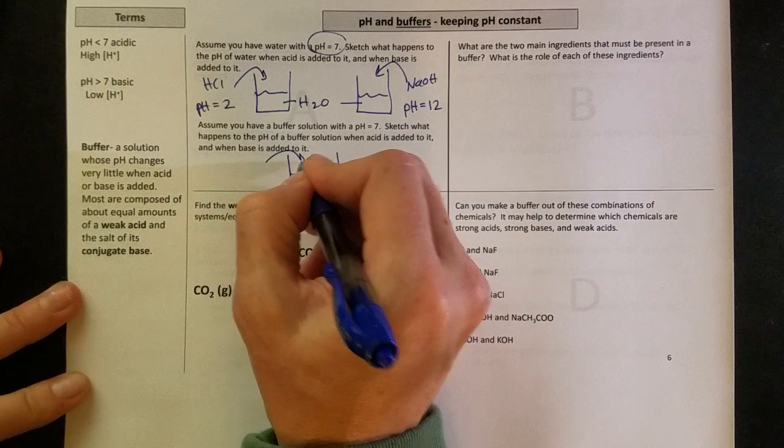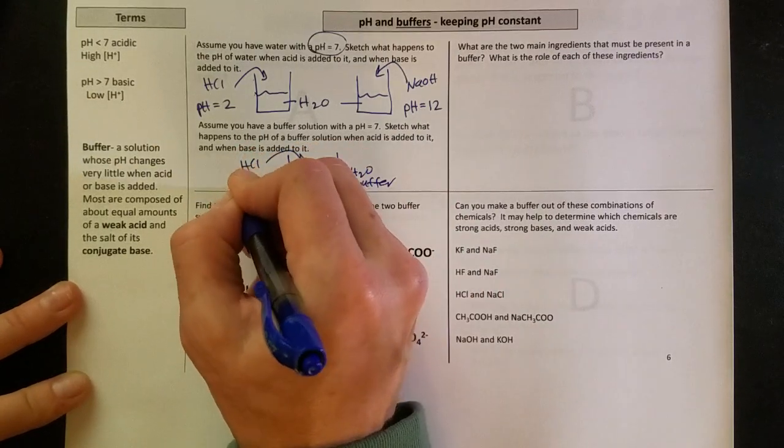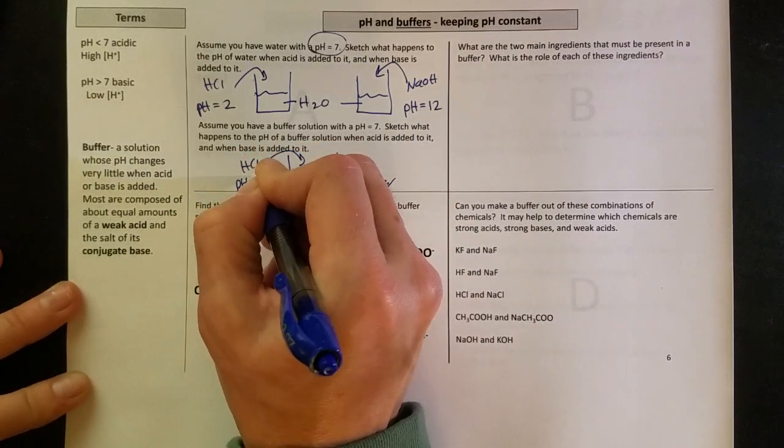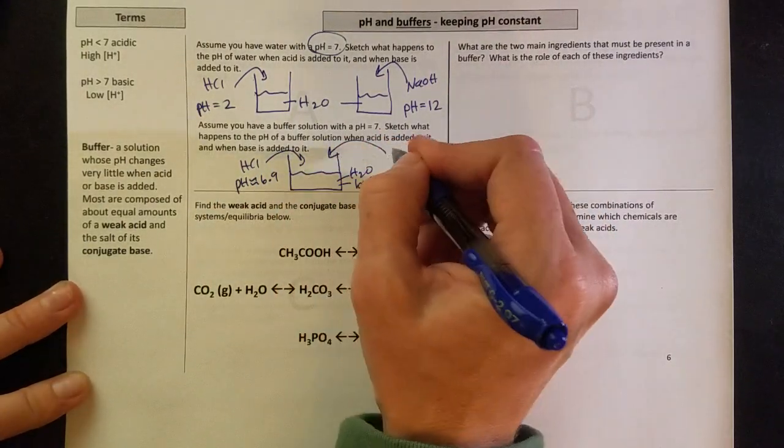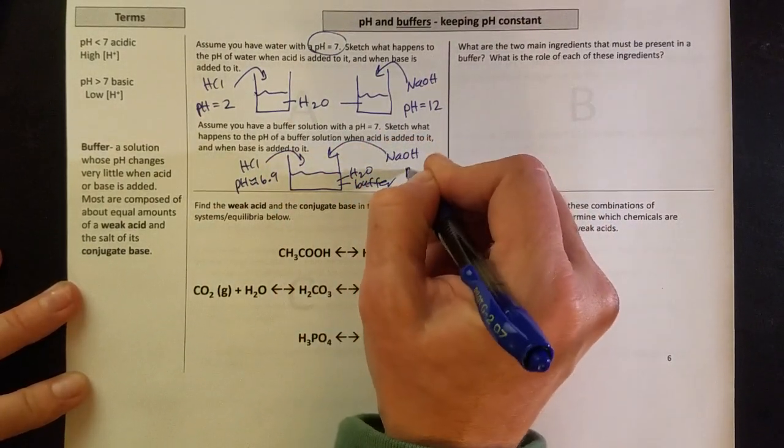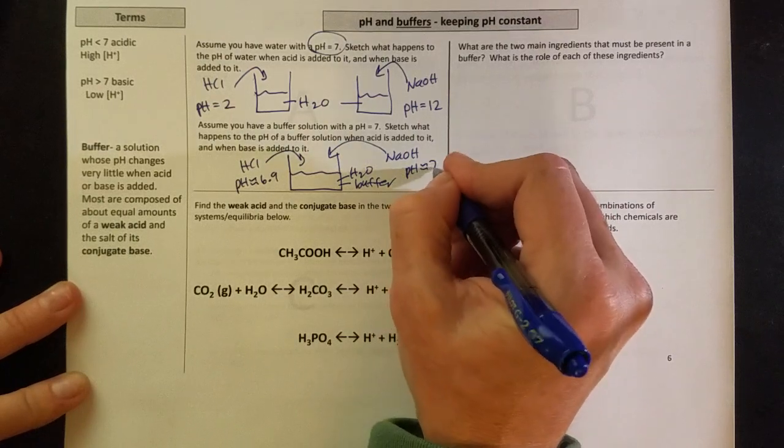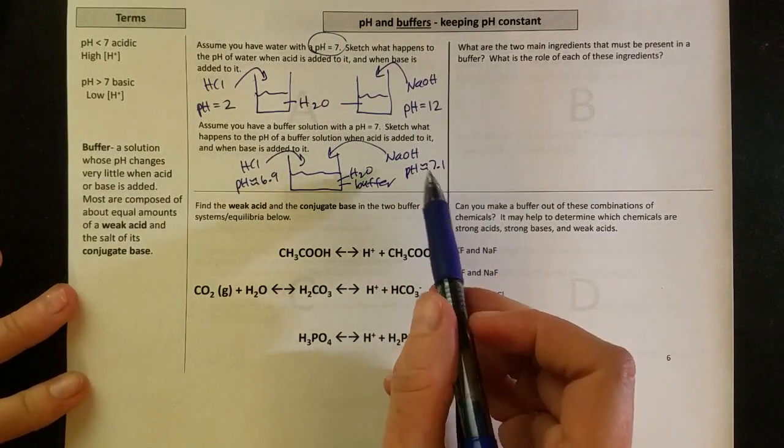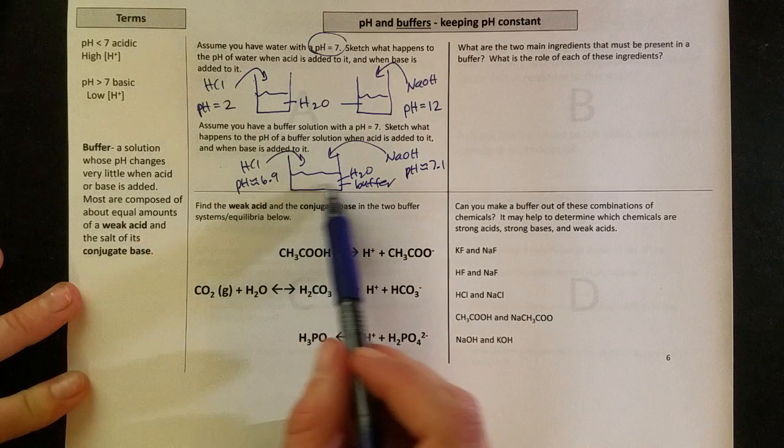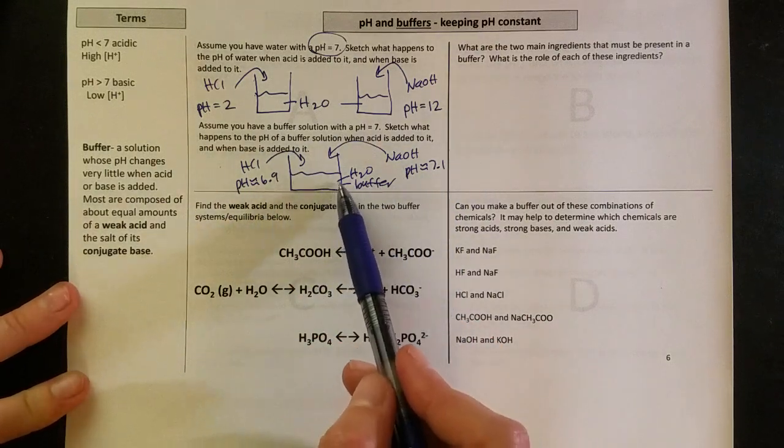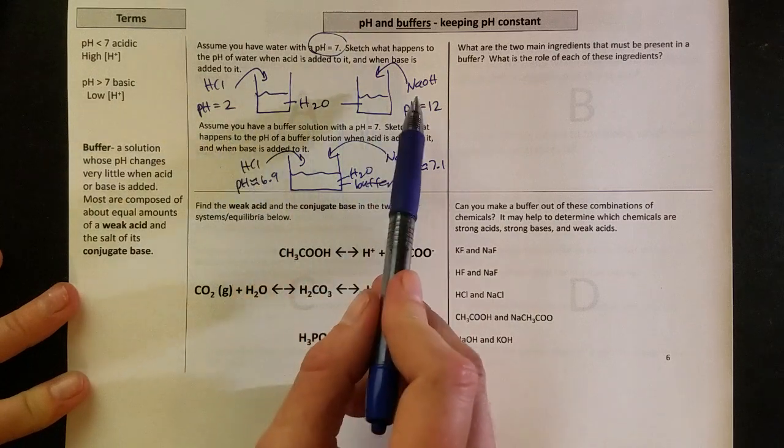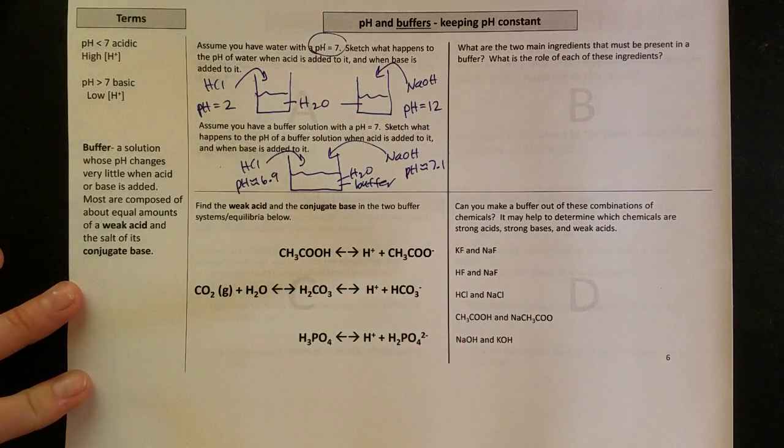If I add acid, that pH will stay right around 7, maybe 6.9. Or if I add base to it, that pH is going to go up, but just a tiny bit, maybe 7.1. And so this is much more desirable. To have boring pH changes is good for our blood. We don't want this to happen, we will die quickly if our pH goes that high or low.